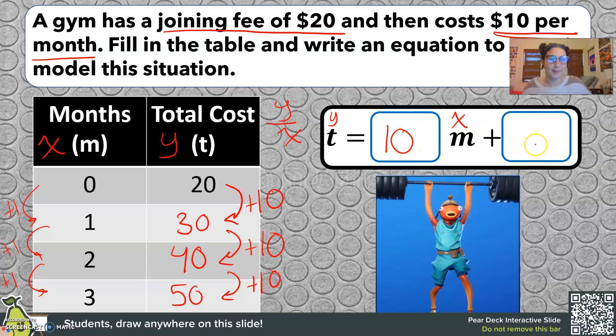So now let's find the y-intercept. We know from a table that the y-intercept is the point where x is 0, or in this case where m is 0. So that would be 20. But let's look at it from the context of our problem. The joining fee is $20. That's what happens after no month. That value is not going to change.